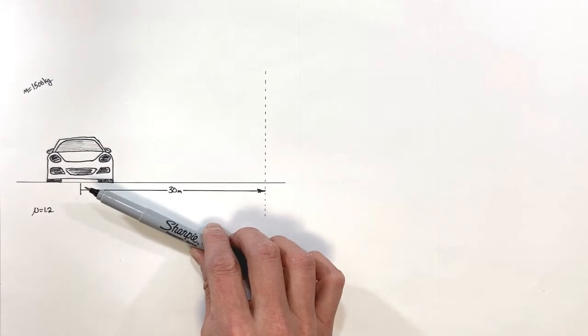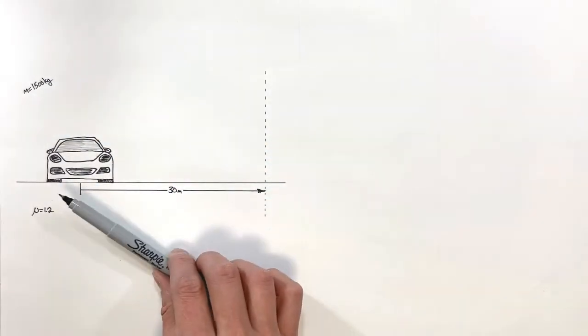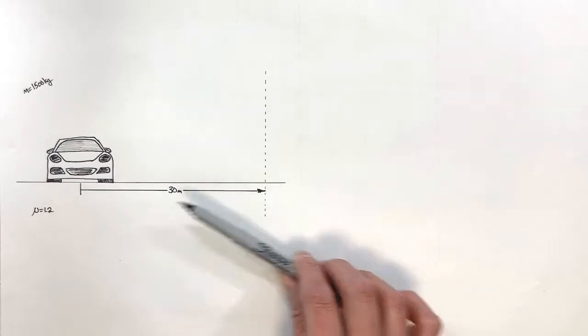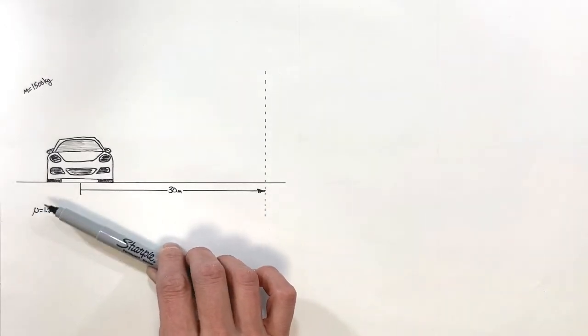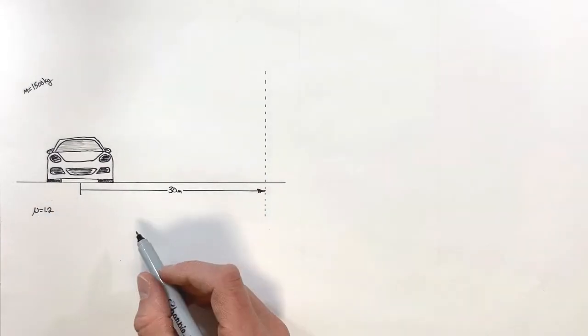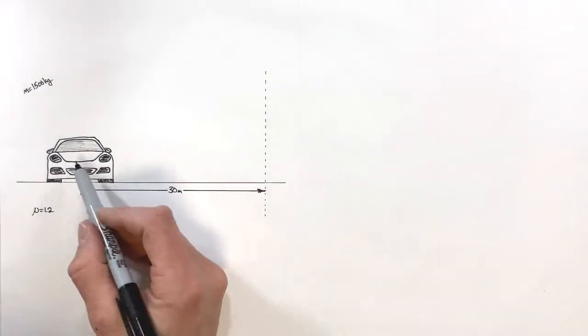This car has a mass of 1500 kilograms. It's going to drive around a corner with a radius of 30 meters, and there's a coefficient of friction between the tires of the car and the road of 1.2. You'll see why that's important in a little while as well.